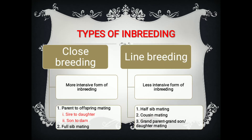Now we will discuss the types of inbreeding. Inbreeding has been categorized into two types: close breeding and line breeding. Close inbreeding refers to a more intensive form of inbreeding, while line breeding refers to a less intensive form of inbreeding.